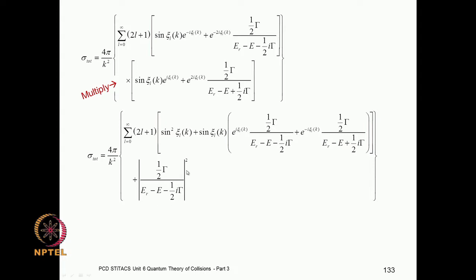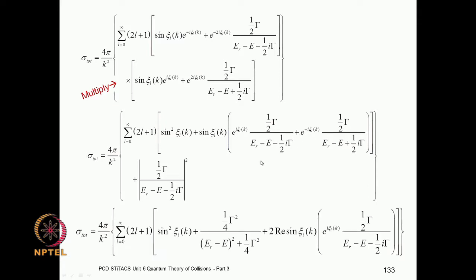In the last term, xi disappears — it is just the modulus squared of those two terms, since they are complex conjugates. In the cross terms, sin(xi) appears as a common factor, and with e^(+i·xi) in one term and e^(−i·xi) in the other, their sum equals twice the real part of that complex number. This gives a very simple relationship: the pure Breit-Wigner part, the background part, and an interference part.